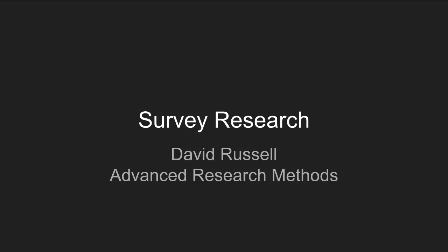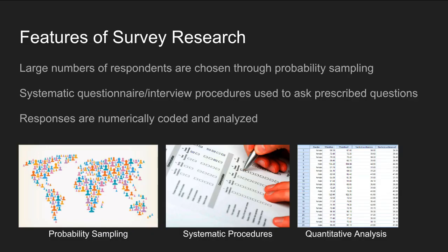Survey research is one of the most common ways that sociologists collect data for their studies. There are a few features of survey research. One of them is that respondents are usually chosen through probability sampling methods, in which each respondent has a known chance of selection for participation in the study. Another feature is that it utilizes systematic questionnaires and interview procedures to ask a set of prescribed questions with pre-set response categories that are asked the same way for every participant.